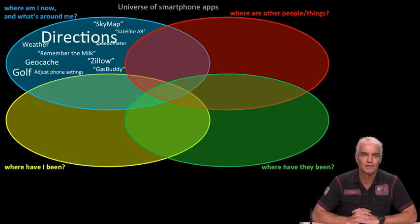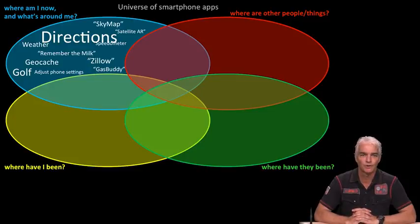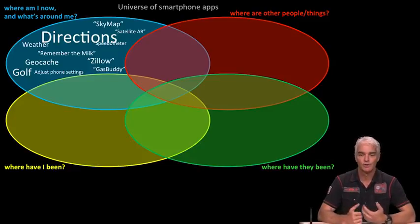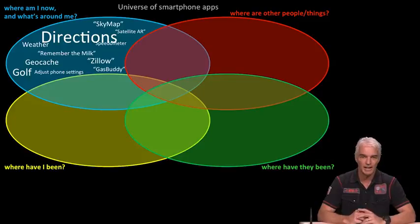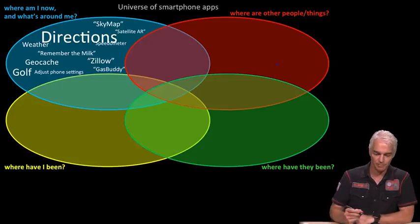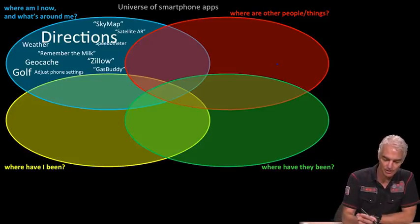In the blue category we have apps around 'where am I and what's around me.' The first and most important killer app for GPS was getting directions. We all use maps on our smartphones and get turn-by-turn directions — that is by far the most important and most widely used application of GPS in smartphones.